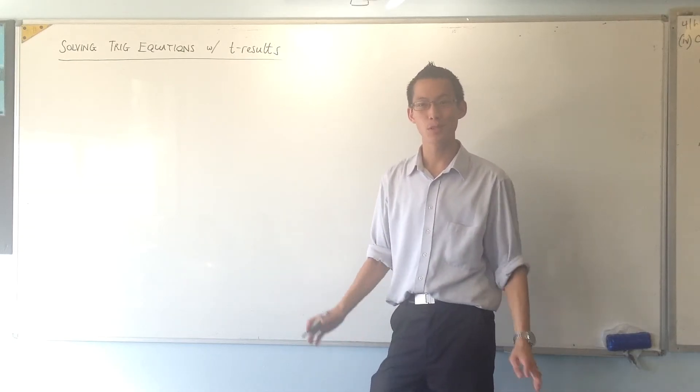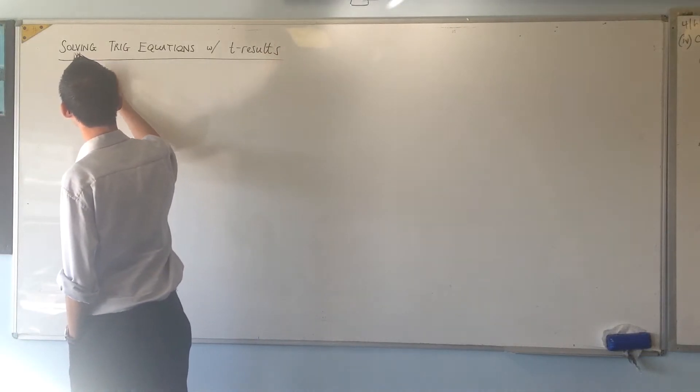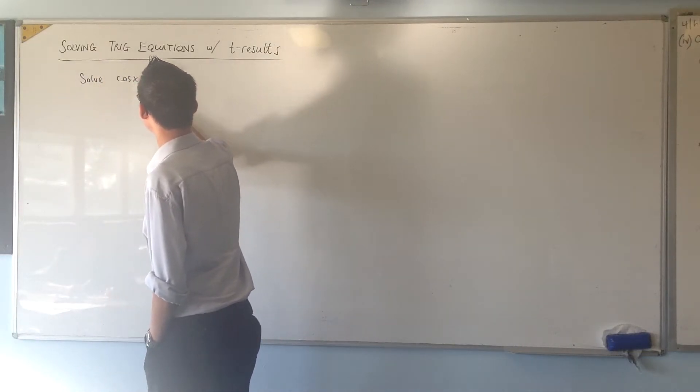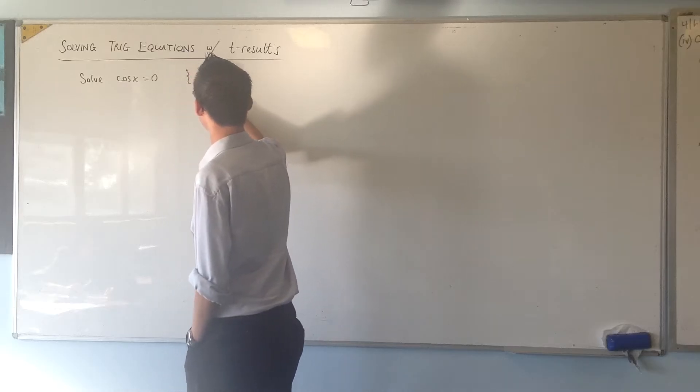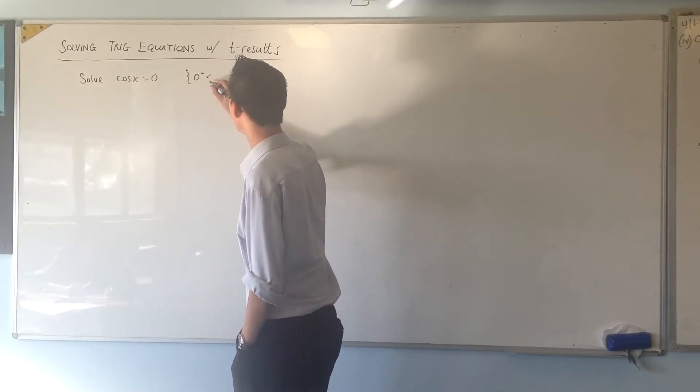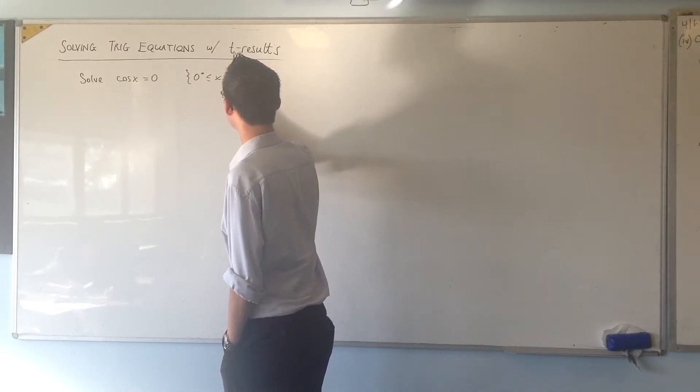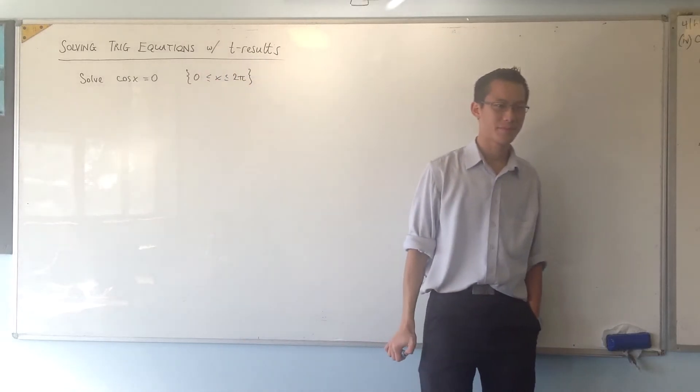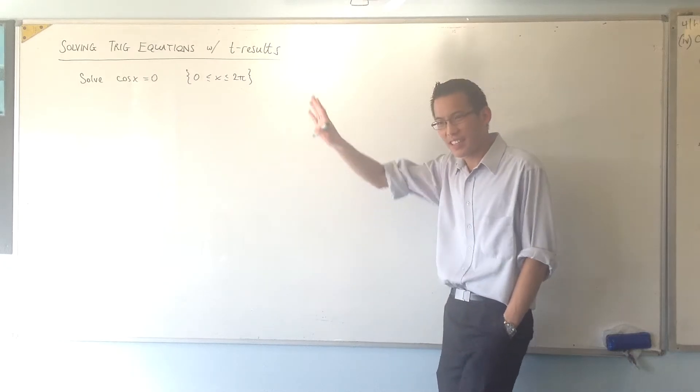So let's start with a super, super easy one. Solve cos x equals 0. And we'll go from 0 to 2 pi.